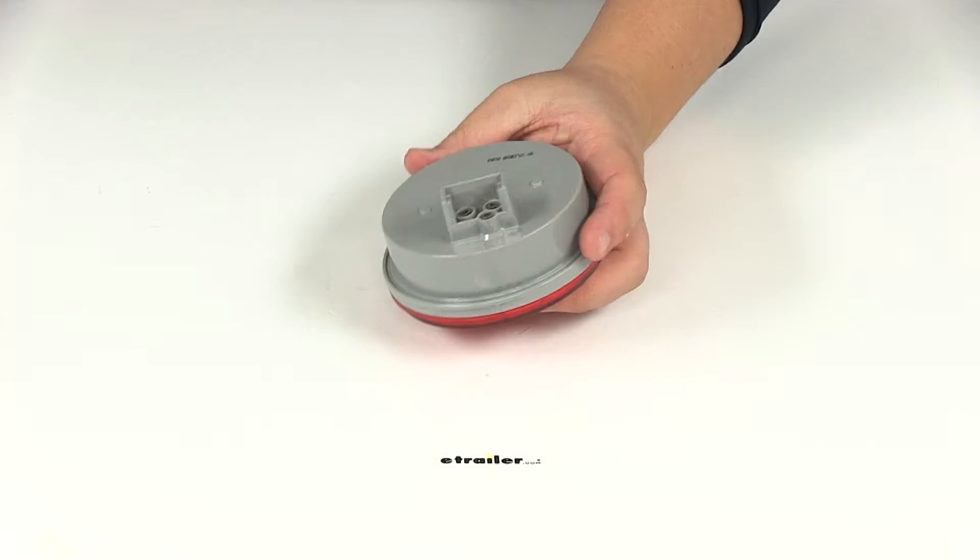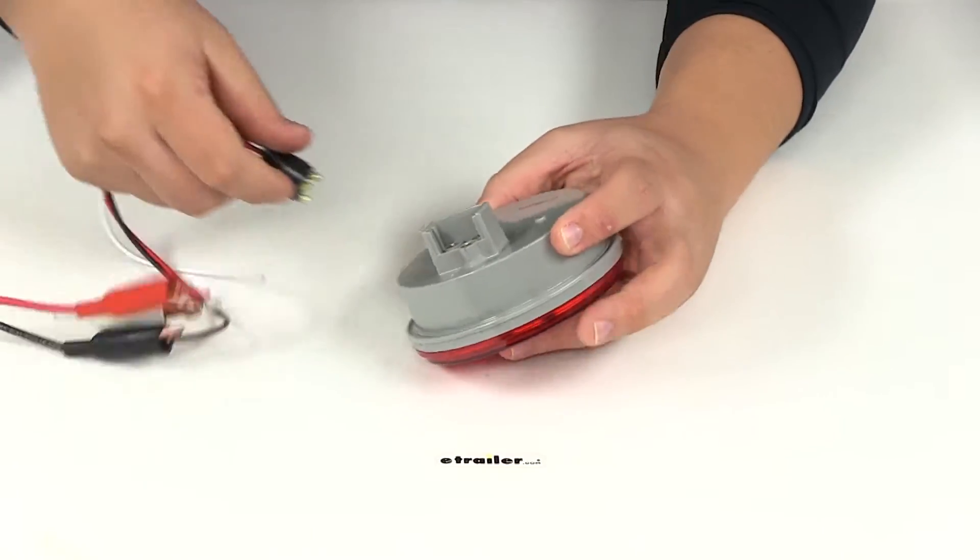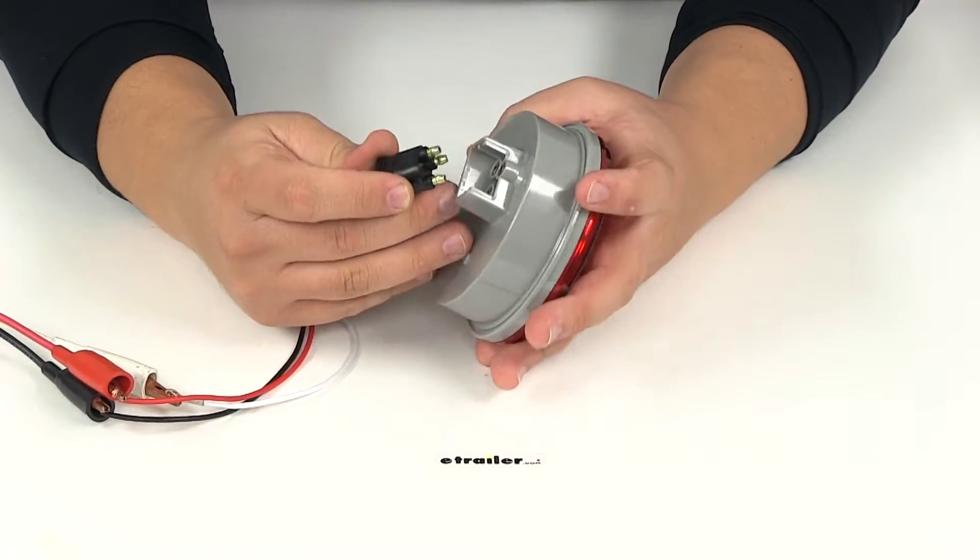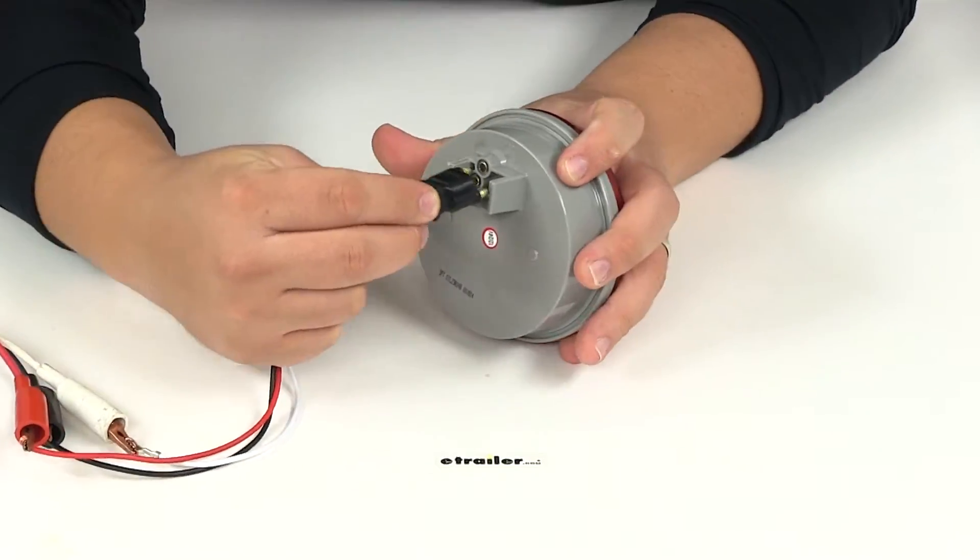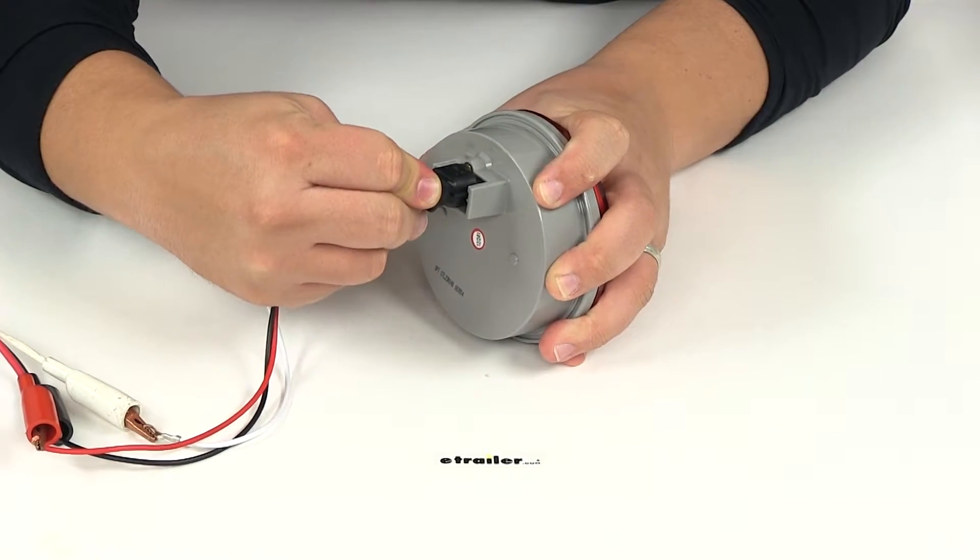We're going to hook this up to our external power source so you can see what it looks like with power running to it and with our overhead lights turned off. We'll take our three-prong connection and plug it directly into the connection point at the back of the housing.